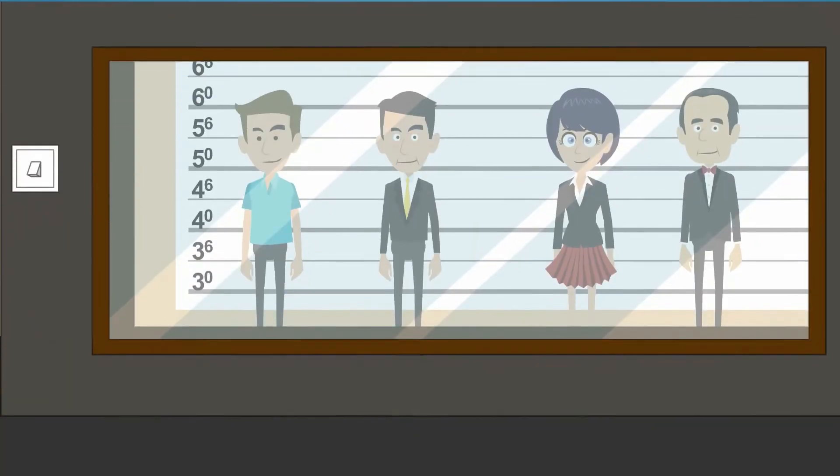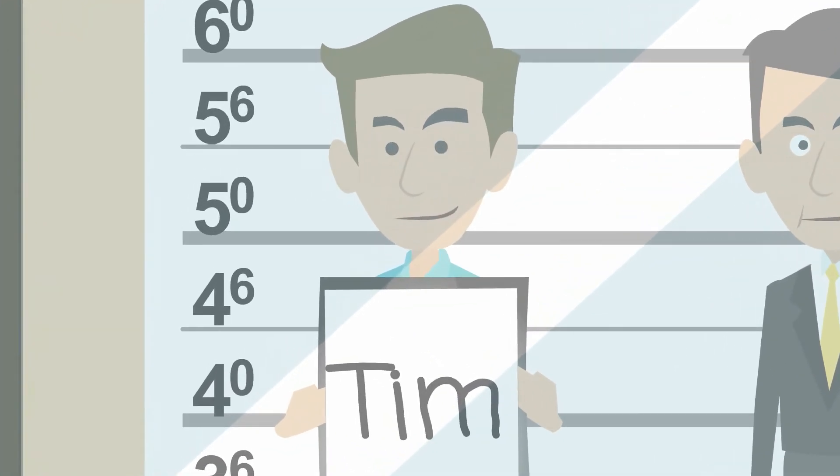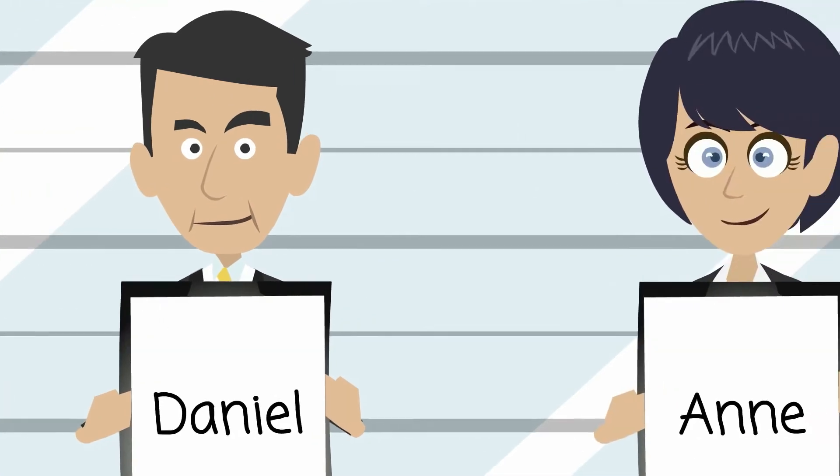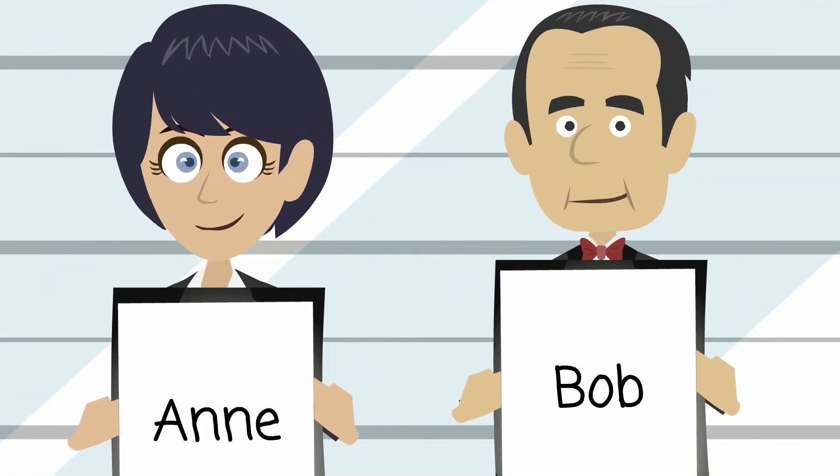Let's say you are working on a project in which there are four stakeholders. Tim is your teammate who you need to submit the data to. Daniel is your manager who needs to approve your project. And Anne and Bob are your colleagues who you need to present the project to.